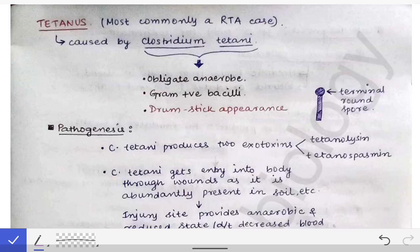Today we will learn about tetanus. Tetanus is generally asked as a clinical scenario-based question in which the examiner gives a scenario: a driver who suffered a road traffic accident has wounds contaminated with soil. That driver presents to the OPD in a spastic condition with severe muscle contractions. You will be asked about pathogenesis, diagnosis, lab diagnosis, and prevention of the condition.